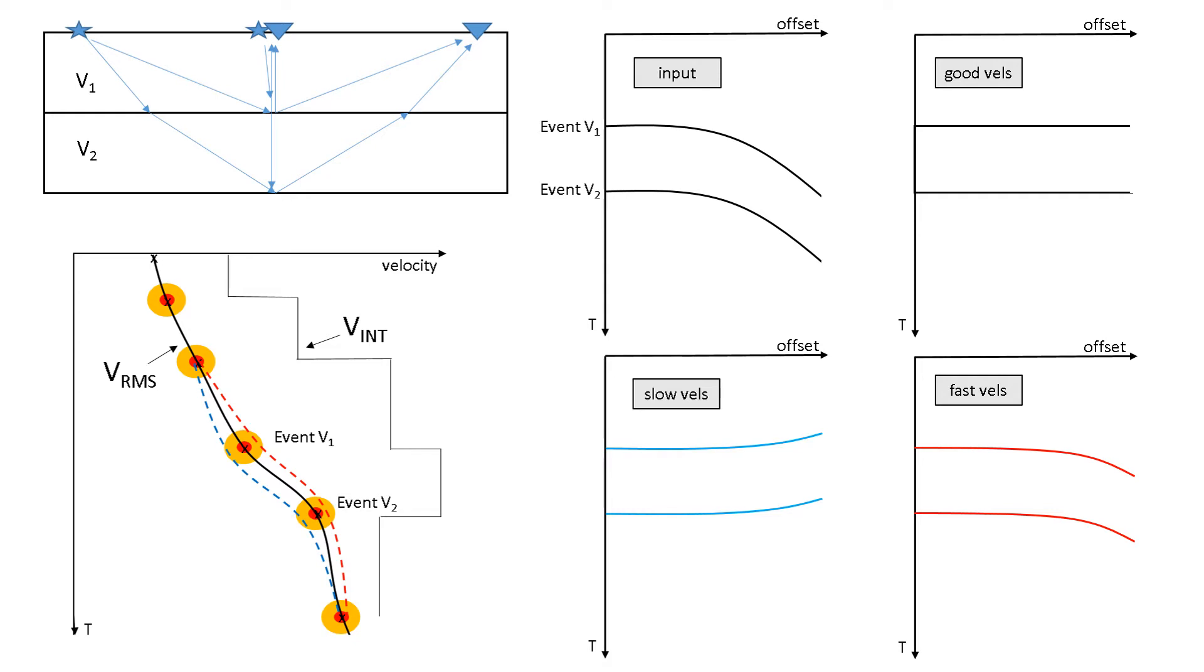If we know those velocities, then we can correct for that farther distance. We pick the velocities like here in the bottom left. Velocity increases to the right, time goes down, we get semblances along here. Pick, pick, pick, pick, pick.